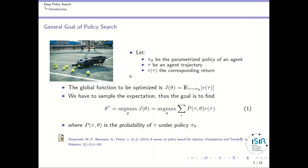First, let's define again what policy search is. Take for instance this robot whose goal is to collect some tennis balls over time. We want this robot to collect as many balls as possible given some time limit. To define the mathematical tools we need, we first have to define the controller of this robot, and we will take some parametric policy, which we call p of theta, where theta is a set of parameters — for instance, the weights of a neural network.